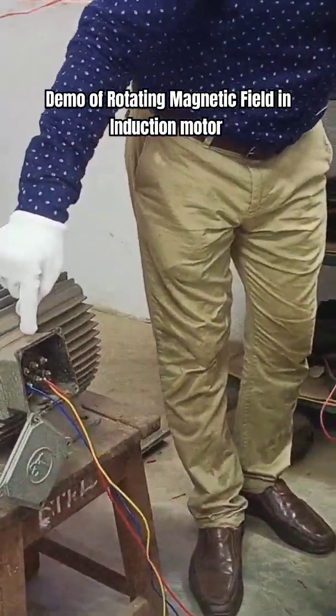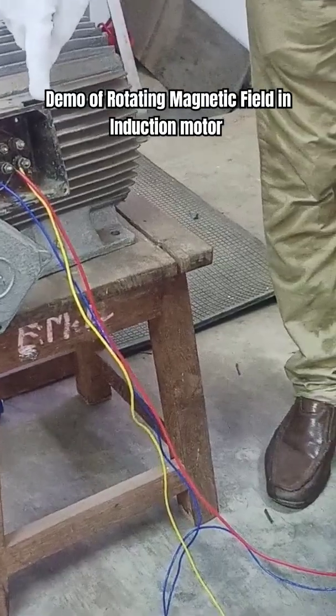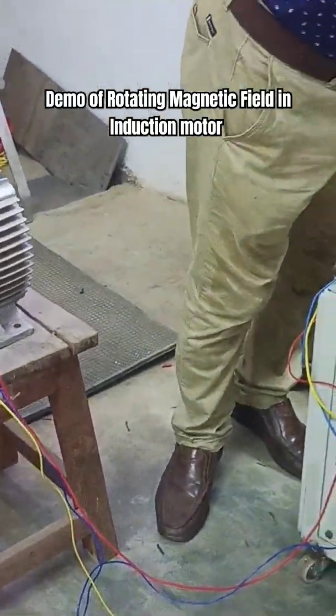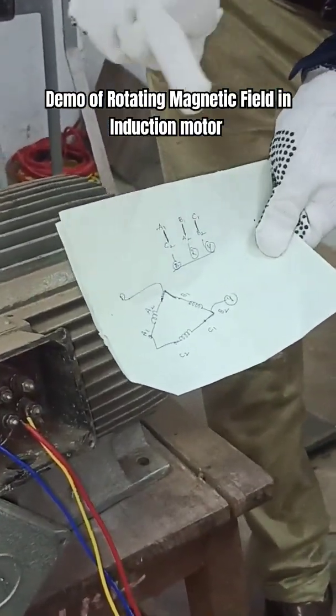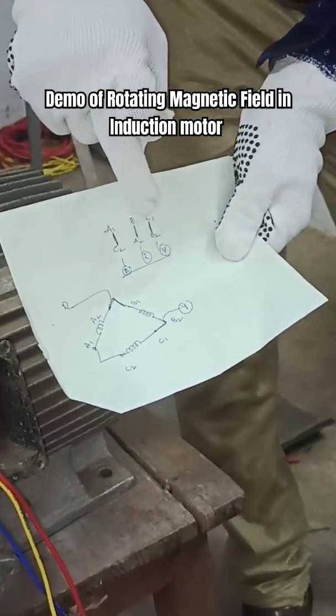has three windings: A1, A2, B1, B2, C1, C2. You can see the internal connections here—the top one is A1, B1, C1 and the bottom one is C2, A2,